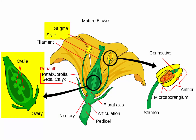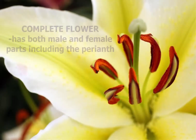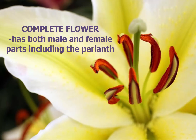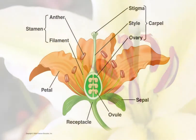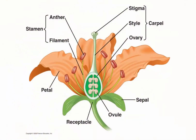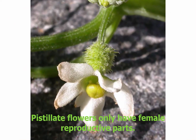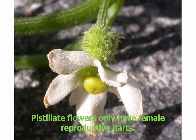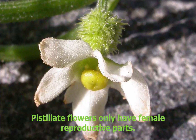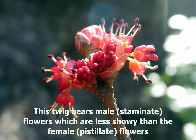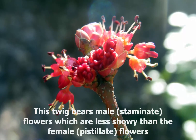Flowers can be categorized as complete or incomplete. Complete if it has both the male and female components, including the sepals and the petals. If one of them is lacking, the flower is said to be incomplete. In the case where only one reproductive part is present, a flower can be pistillate if it only contains the female structures, and staminate if it only has the male structures.